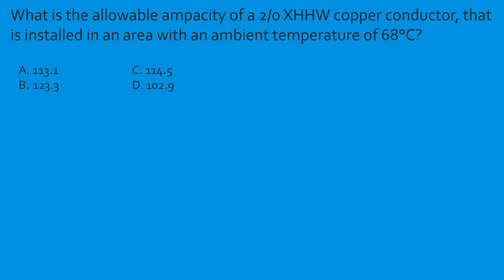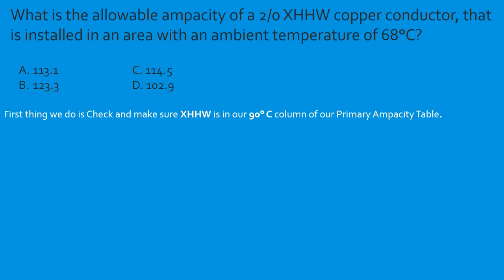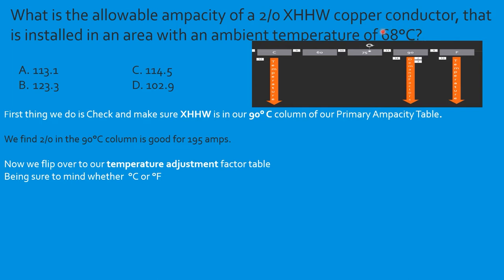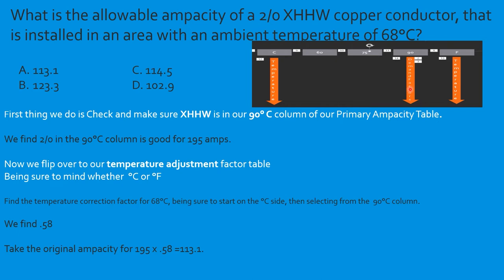Question: What is the allowable ampacity of a 2/0 XHHW copper conductor installed in an area with an ambient temperature of 68°C? XHHW is listed; 2/0 copper is 195 amps. Head to the temperature adjustment table — this question specifies Celsius, so start on the left-hand side, come down to 68°C, then shoot all the way over to the 90°C column. Correction factor is 0.58. So: 195 × 0.58 = 113.1 amps. Select A. A wire once good for 195 amps is now only safely rated at 113.1 amps.